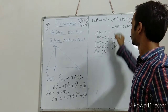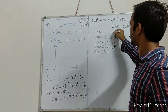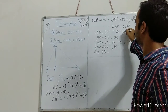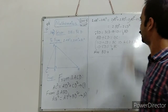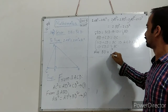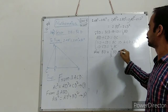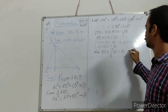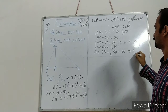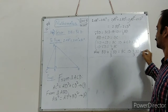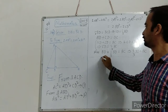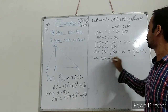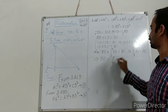Also, bd plus one third of bd is equal to bc. So one plus one-third equals four-thirds, giving four-thirds of bd equals bc. From this, bd is equal to three fourths of bc.